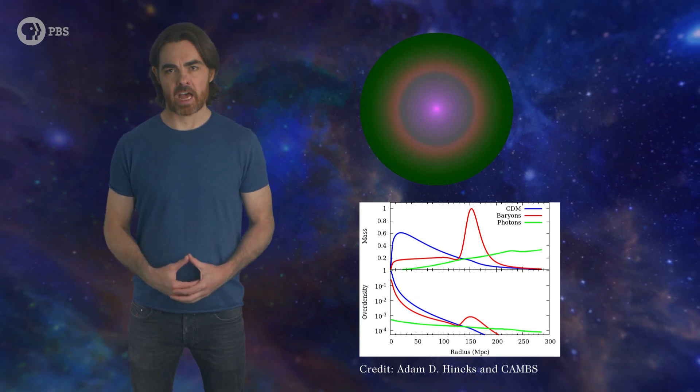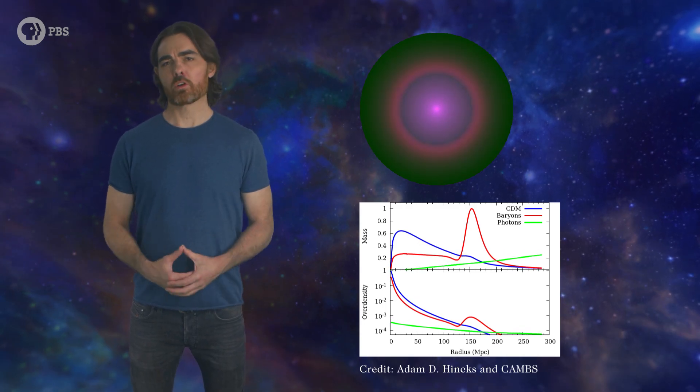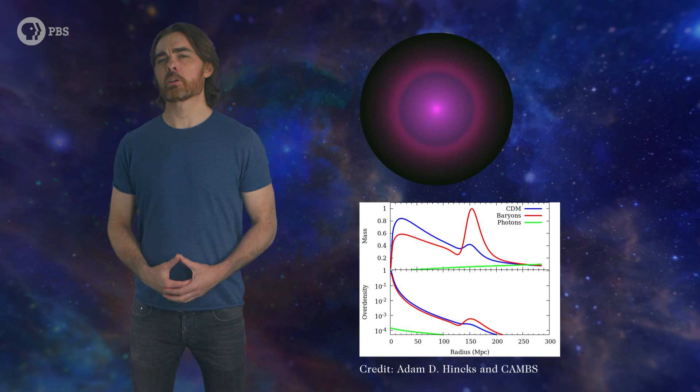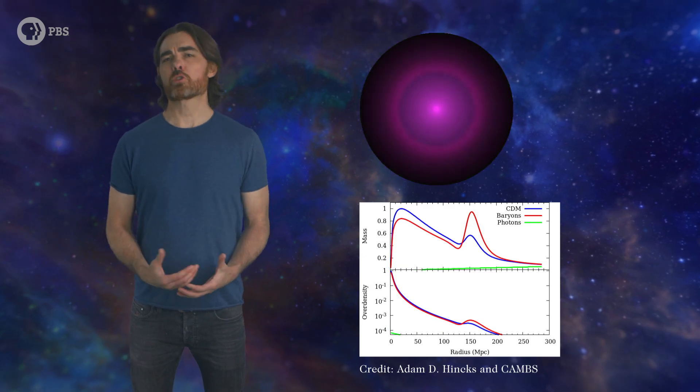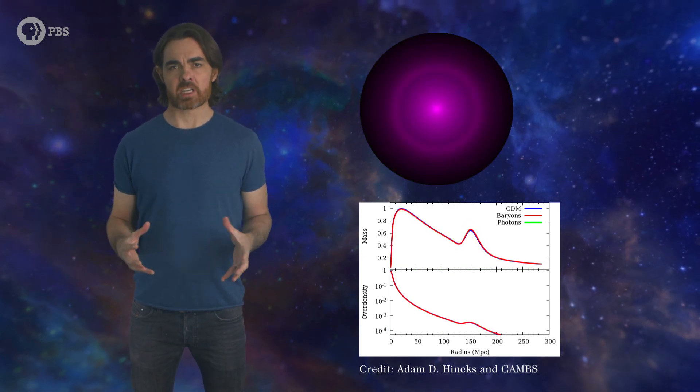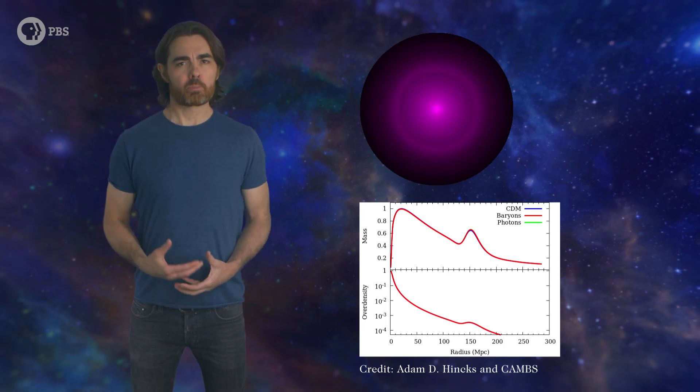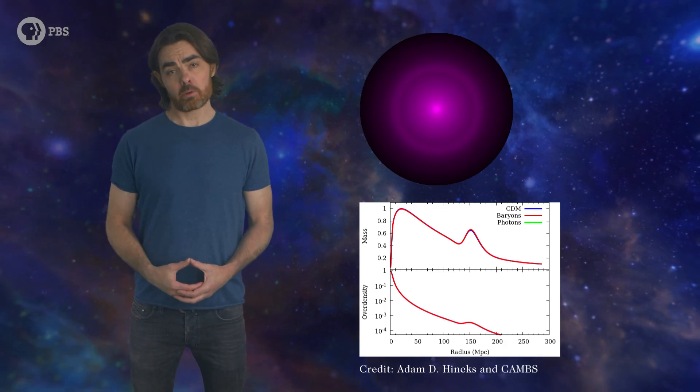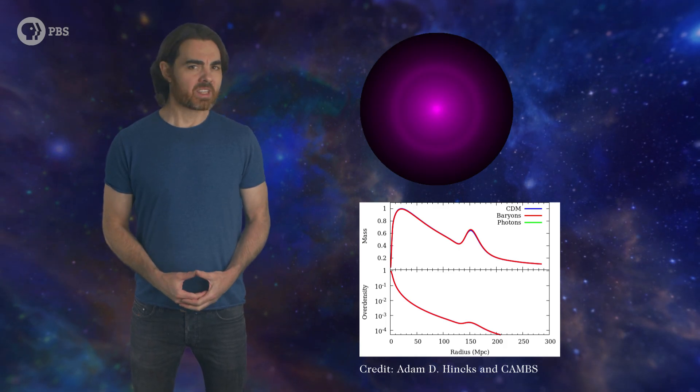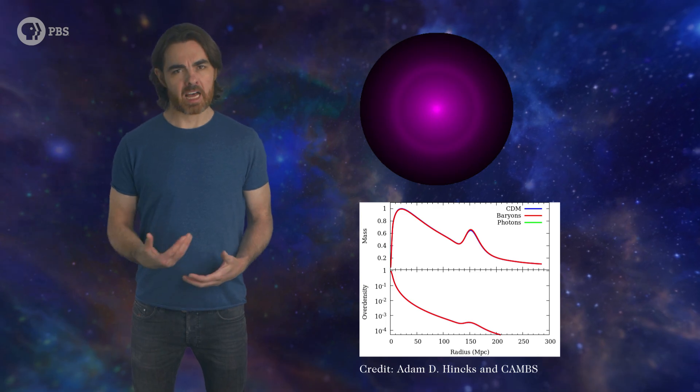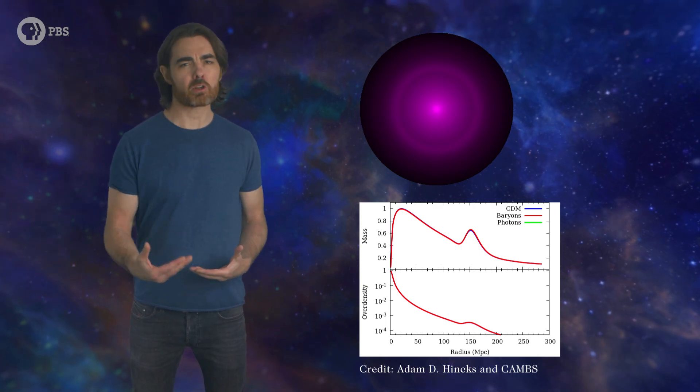While all of this was happening, dark matter was doing its own thing. Immune to the radiation pressure, the central dark matter overdensity had continued to grow. It pooled on the expanding shell, and was pulled by it. When the expanding wave froze, both dark matter and baryons flowed together and consolidated the new structure. Once more in the gravitational grip of dark matter, hydrogen and helium could begin the long work of collapsing into stars and galaxies as the universe continued to expand.